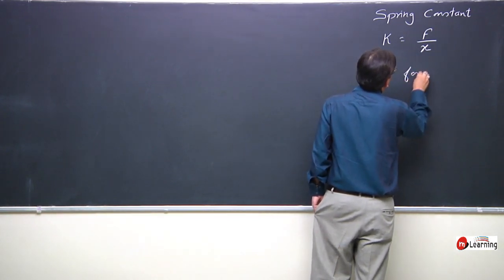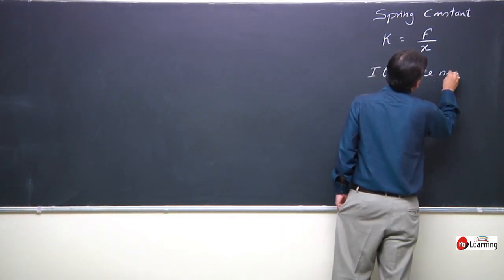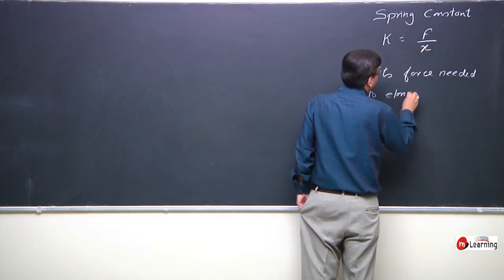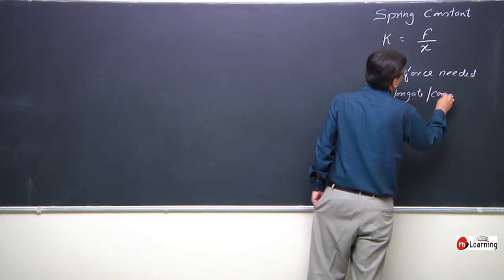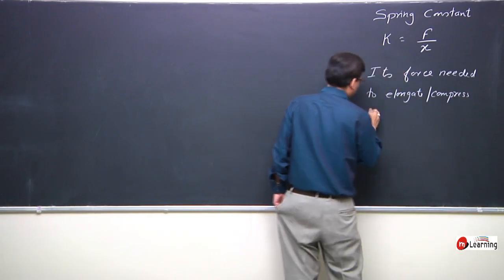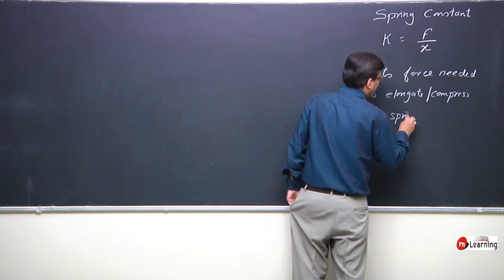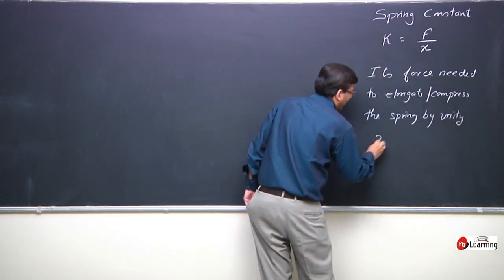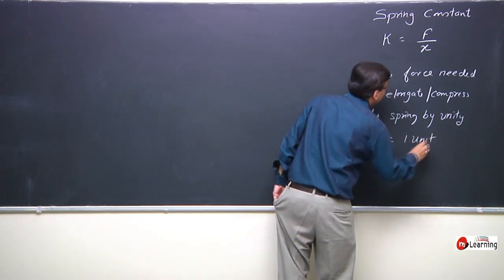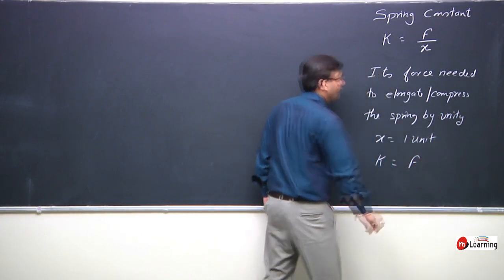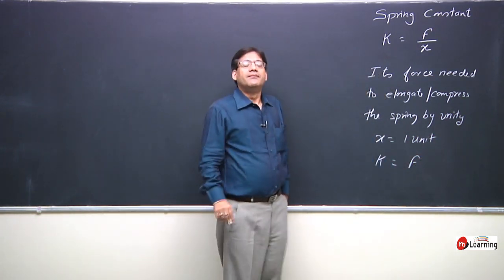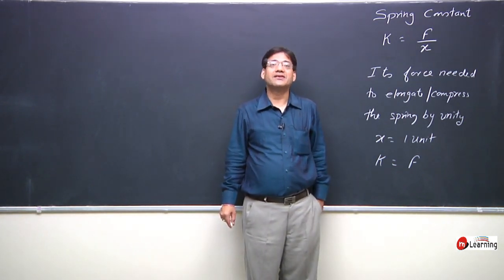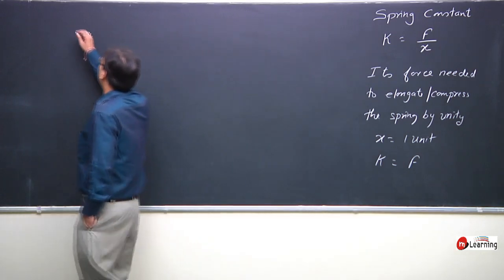The spring constant k is the force needed to elongate or compress the spring by unit length. If x is equal to one unit, then the spring constant equals the force. My next topic is the concept of potential energy of a spring.